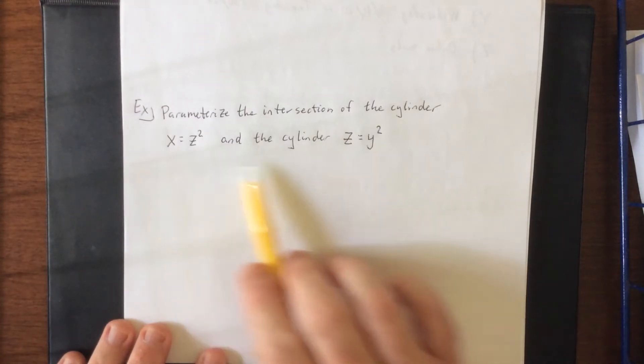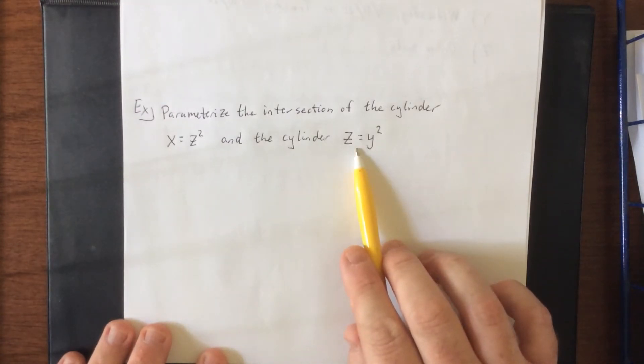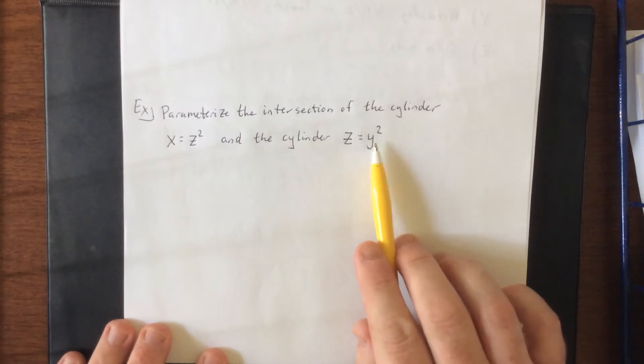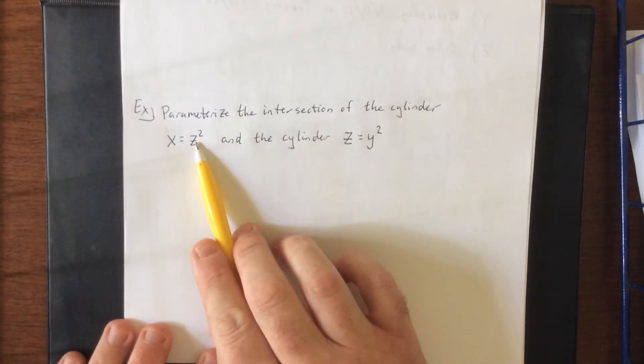Now generally when you have one variable as a function of the other variable, you let whatever that independent variable is be what your parameter is. What I'd like to point out though is that if I were to solve for z in this case over here,